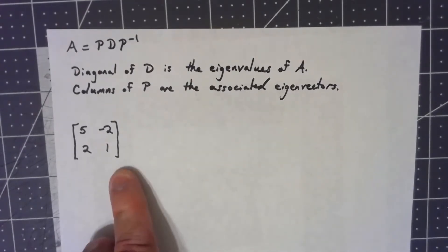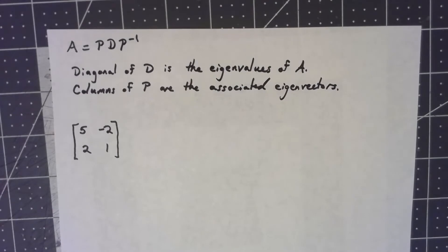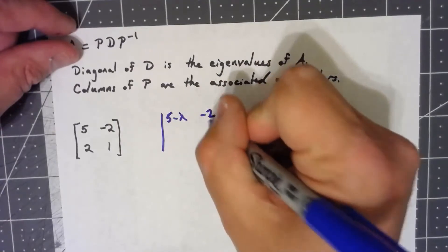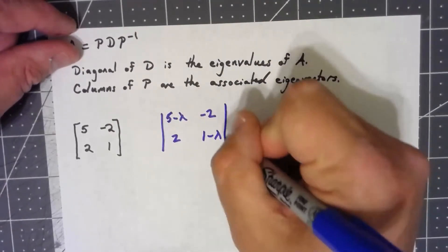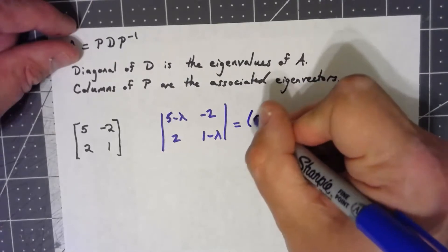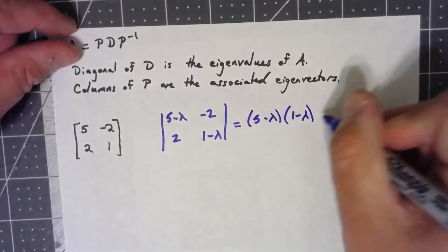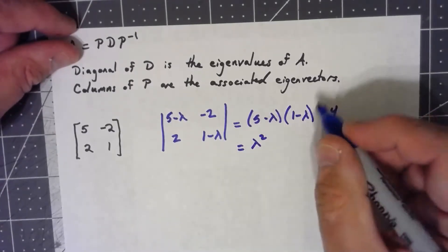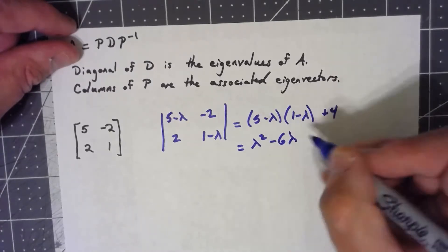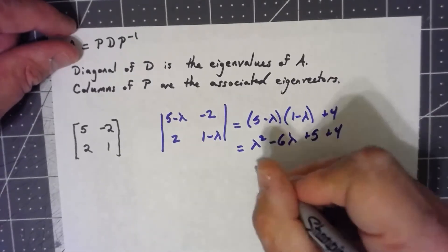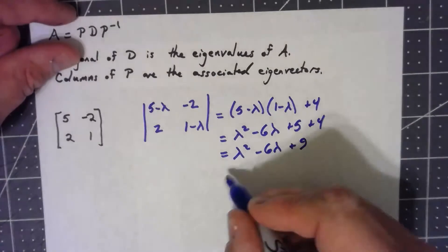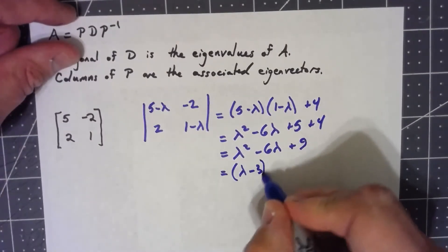So let's take a look at this matrix here. First of all, let's find the eigenvalues. We're taking the determinant of five minus lambda, negative two, two, one minus lambda. That would be five minus lambda times one minus lambda minus a negative four. So I'm going to have lambda squared minus six lambda plus five plus four, which is lambda squared minus six lambda plus nine.